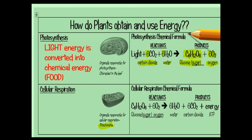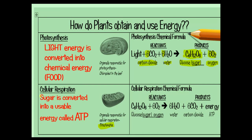Cellular respiration happens in an organelle called the mitochondria. It used to be called 'mighty mitochondria — the powerhouse of the cell.' It's called the powerhouse because it takes the glucose molecule and converts it into a usable energy called ATP, which stands for adenine triphosphate.